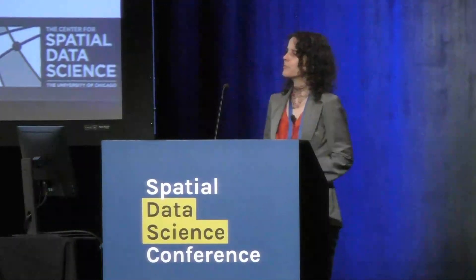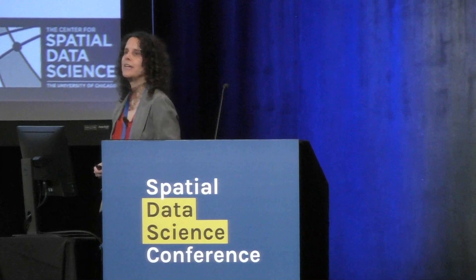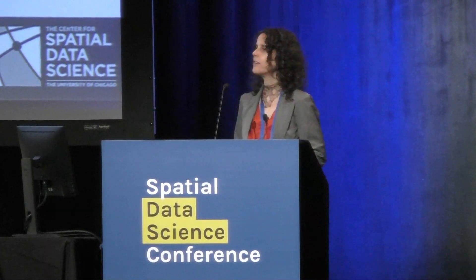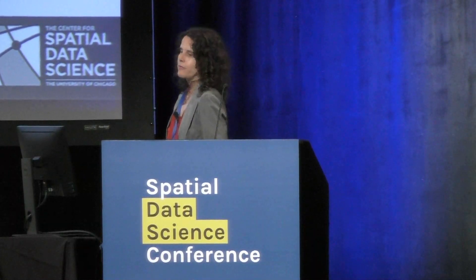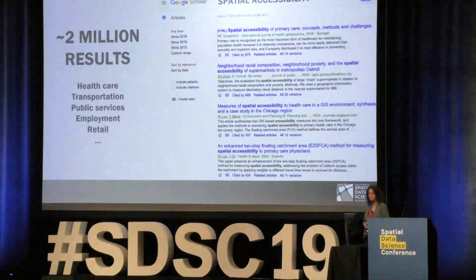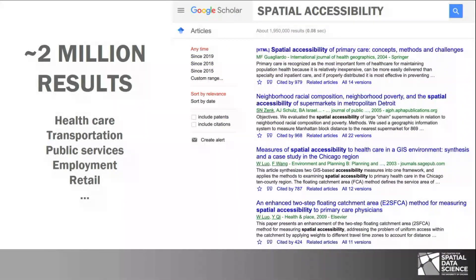When you search for spatial accessibility in Google Scholar, you get 2 million results. A lot of these are applications from the public interest domain. For instance, in healthcare, spatial access metrics are used to define federal healthcare shortage areas, and they're also used to define spatial access gaps to transit, human services, employment, and a variety of other things.